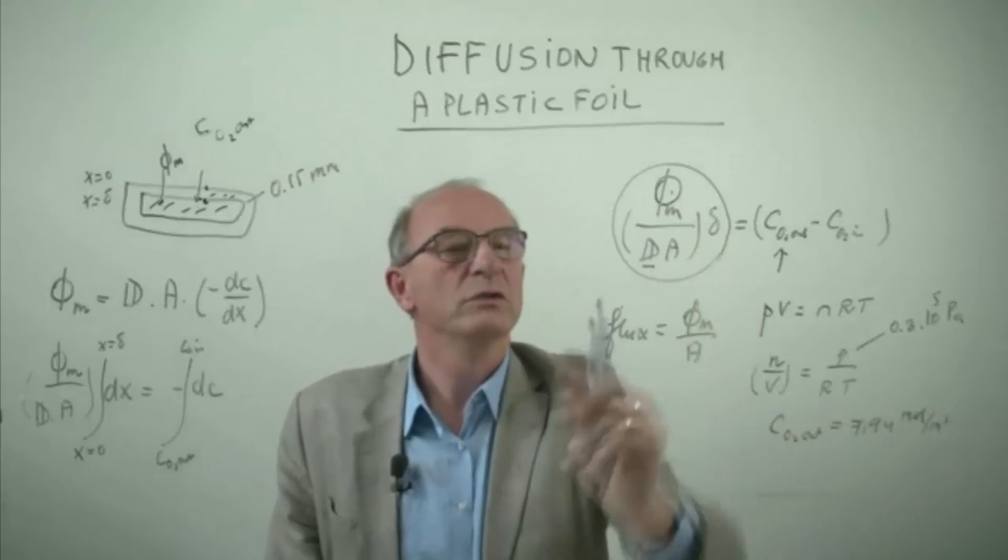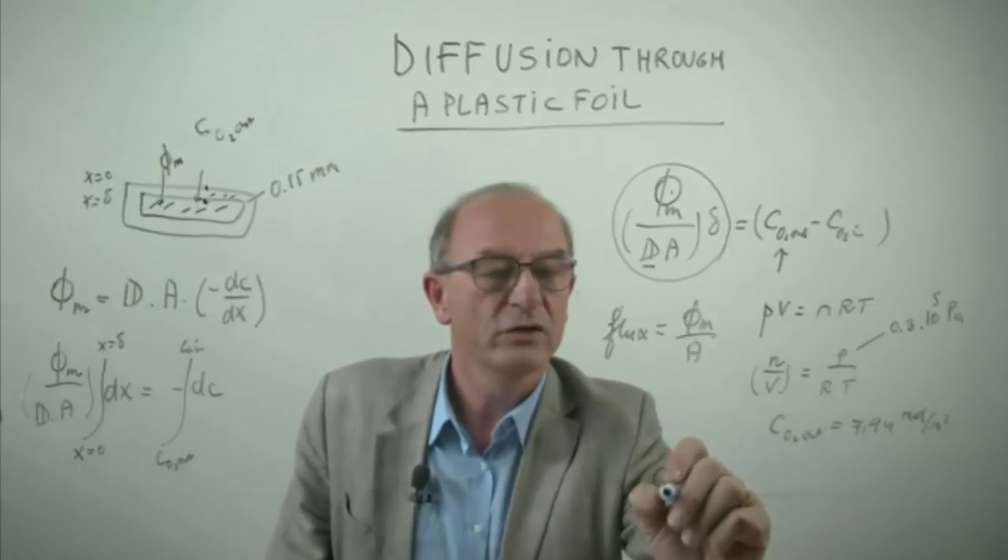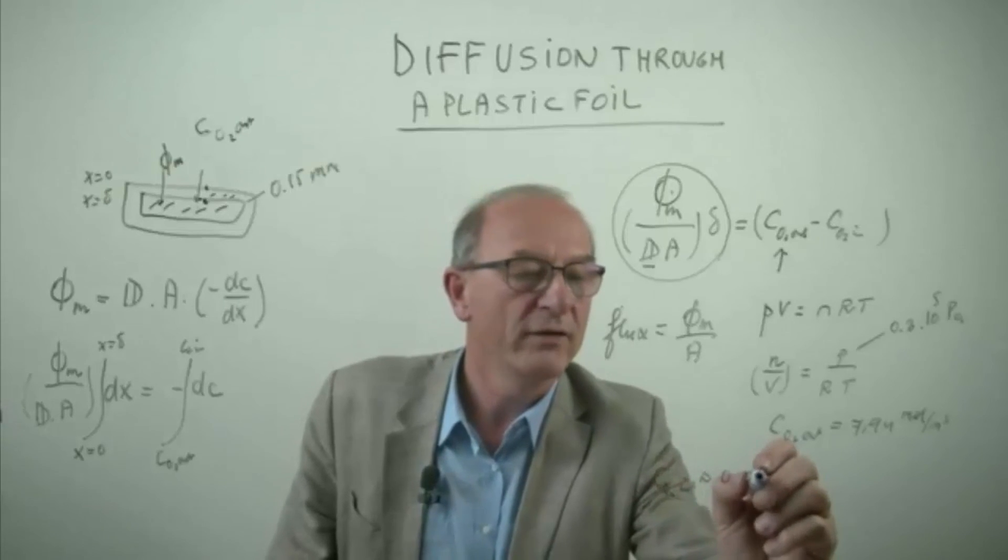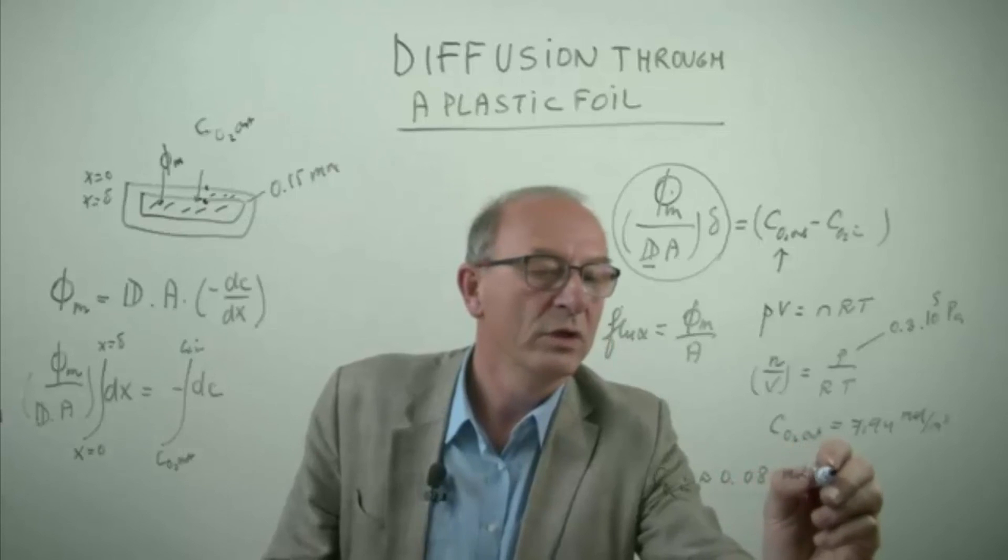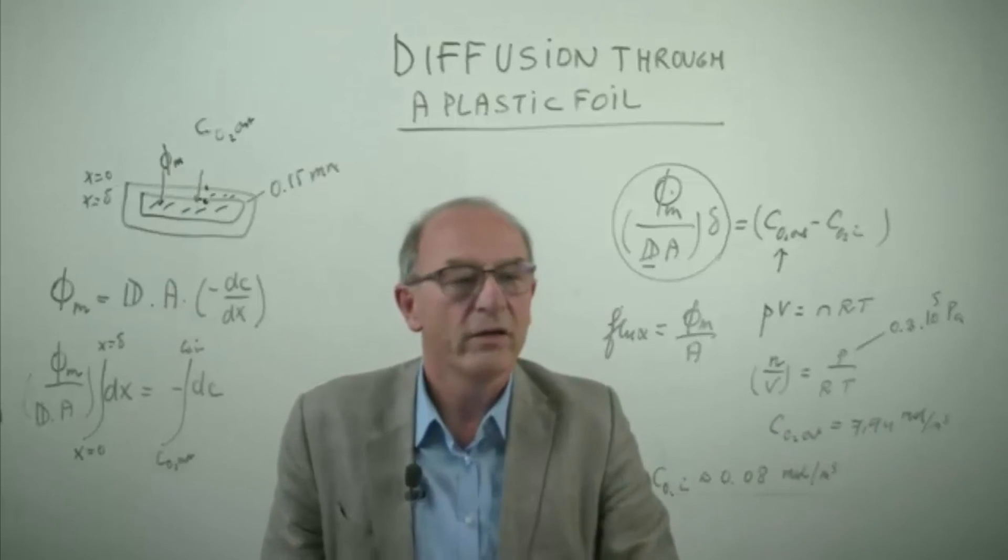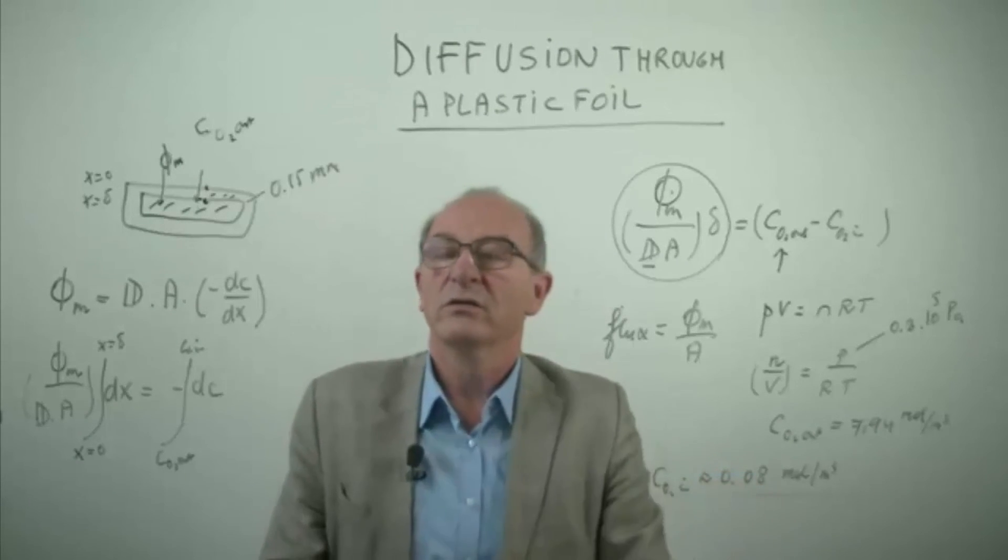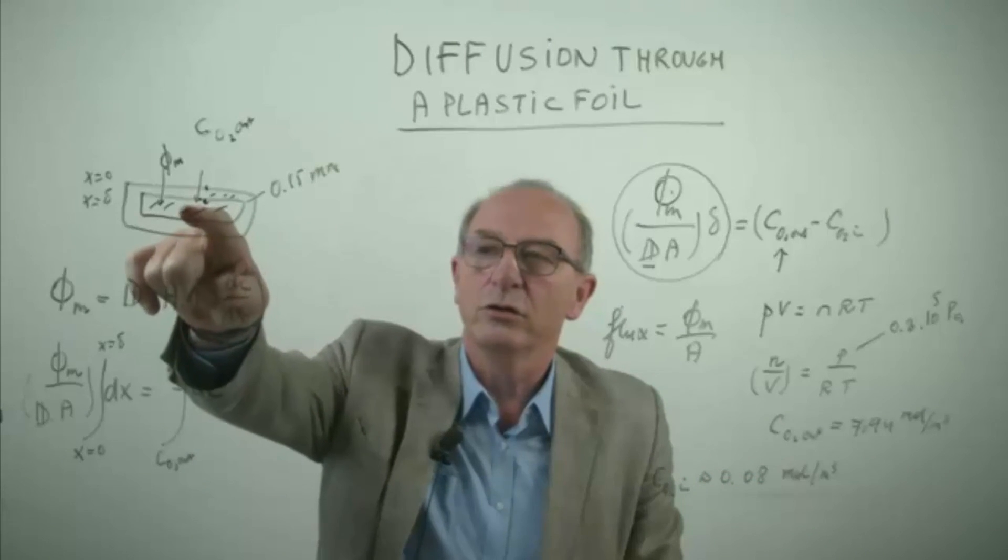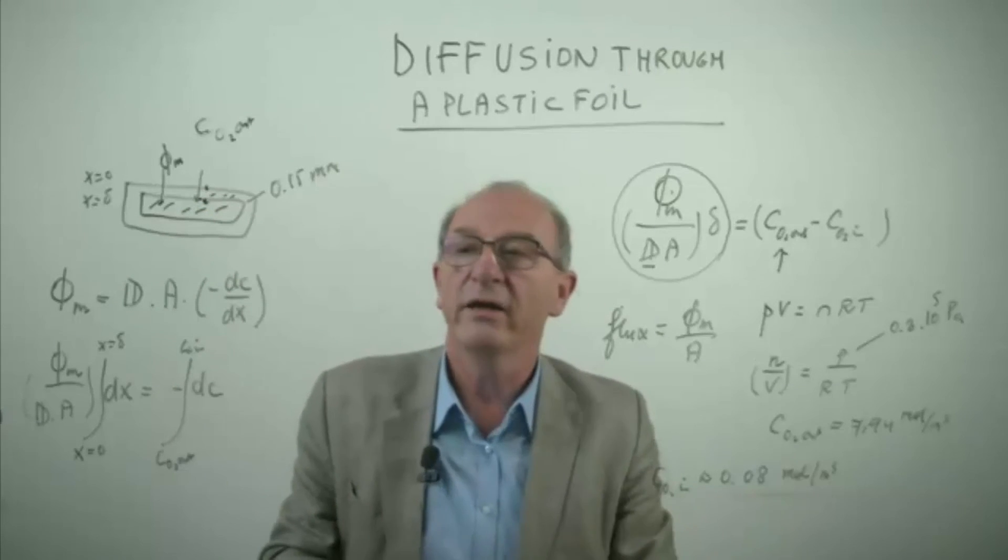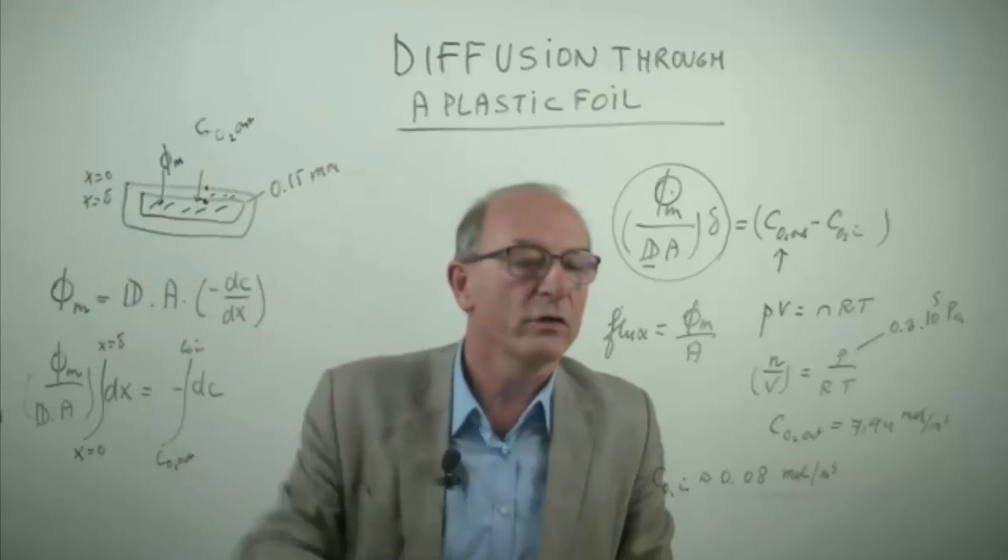Substituting all the values which are given in the example you can derive the concentration of oxygen at the inside which is about 0.08 moles per cubic meter, and you see that's only relatively small in comparison to the outside, but it is of course dependent which concentration is perhaps dangerous or is acceptable for the medicine. If this is already too high then of course you have to pack it in a thicker foil or something.